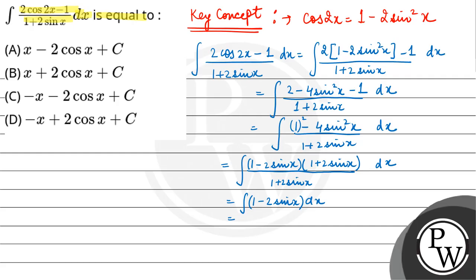And this integration: the integral of 1 is x, minus 2sinx integrates to plus 2cosx. So we get x + 2cosx + C.